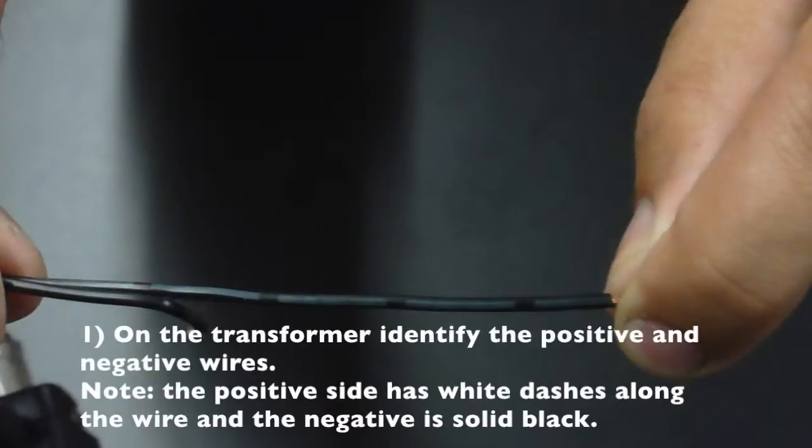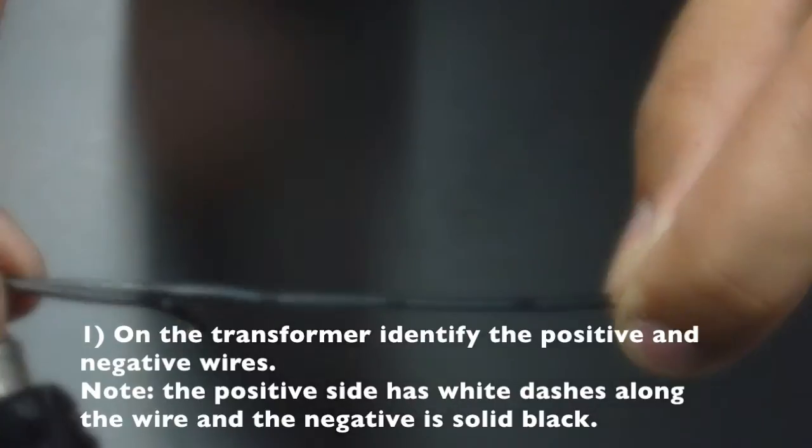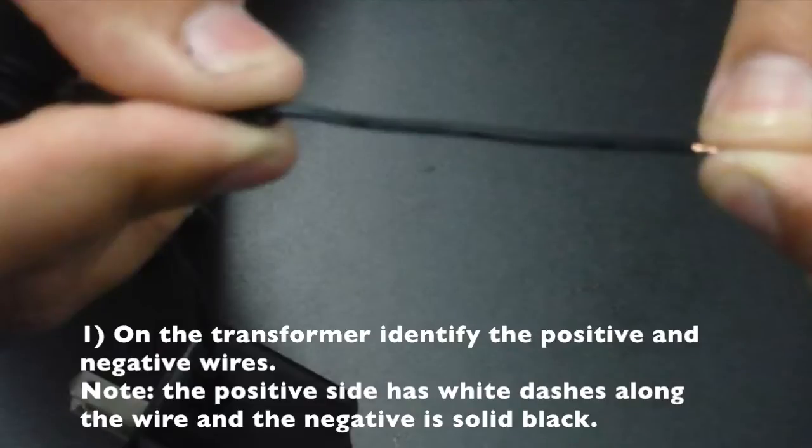On the transformer, identify the positive and negative wires. Note, the positive side has white dashes running along the wire and the negative is solid black.